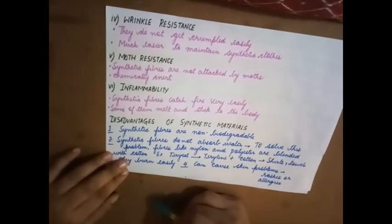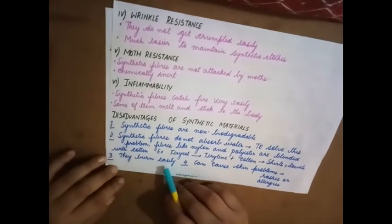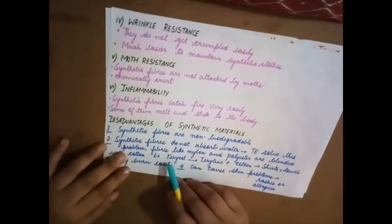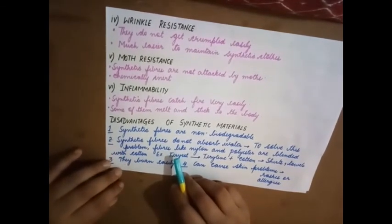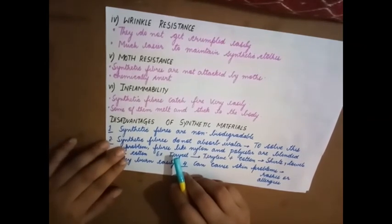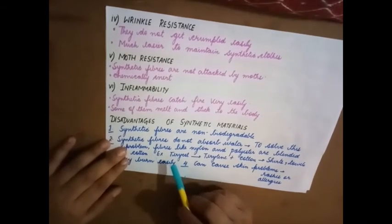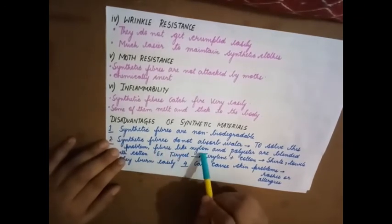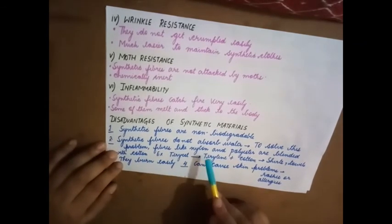Disadvantages of synthetic fibers: They are non-biodegradable. It means microorganisms cannot act on it. Since it cannot act on it, we see that it might clog the sewage. Yes, it can pile up and it can pollute the environment. Synthetic fibers do not absorb water.